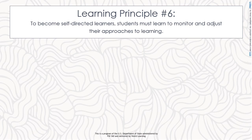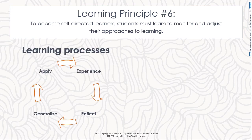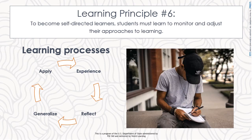Learning principle number six: to become self-directed learners, students must learn to assess the demands of the task, evaluate their own knowledge and skills, plan their approach, monitor their progress, and adjust their strategies as needed. Learners must be able to monitor not just the correctness of their answers, but also their own learning processes. The best way to develop this awareness in students is by asking them to reflect back on their learning and evaluate their own performance.